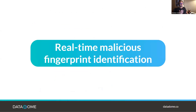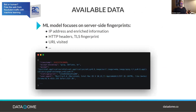Once we know an attack is ongoing, we need to identify the subset of malicious traffic among all website traffic. For this machine learning approach, we focus on server-side fingerprints — attributes accessible when we receive a request, such as the IP address along with enriched information like autonomous system, country, and whether it's a proxy — as well as HTTP headers, TLS fingerprint, and URLs visited.